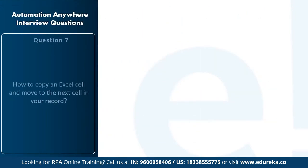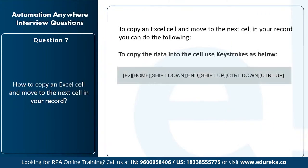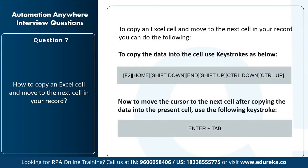The next question is: how to copy an Excel cell and move to the next cell in your record? You can use keystrokes to copy data into a cell: F2, Home, Shift+Down, Shift+Up, Ctrl+Down, Ctrl+Right. Then move the cursor to the next cell after copying using the keystroke Enter plus Tab.